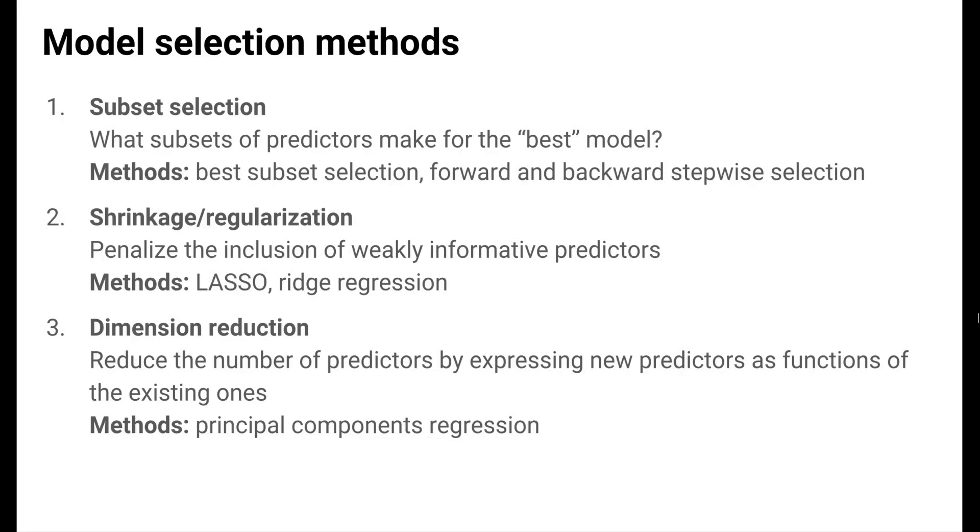Generally, these methods penalize the inclusion of predictors that are only slightly informative of the response. The lasso and ridge regression methods are the most commonly used shrinkage methods. We'll focus on the lasso method because the two are similar, but lasso has the additional benefit of performing variable selection, whereas ridge regression does not.